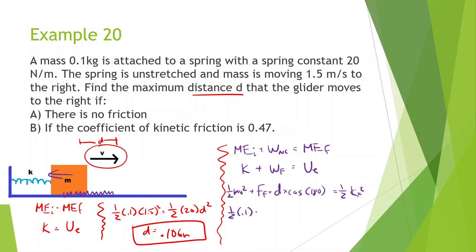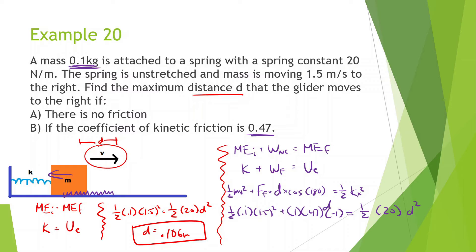Writing it out: one-half times 0.1 times 1.5 squared, plus the force of friction — the normal force is 0.1 times 10, so 1, times the coefficient of friction 0.47, times cosine of 180 which is negative 1, times D — equals one-half times 20 times D squared. I forgot the D term on the friction side, so there should be a D right there.